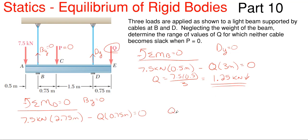Well, Q is a nice simple equation here, just 7.5 times 2.75, all over 0.75. And that gives me a value of 27.5 kilonewtons. And that would be in my downward direction since it came out to be a positive value.